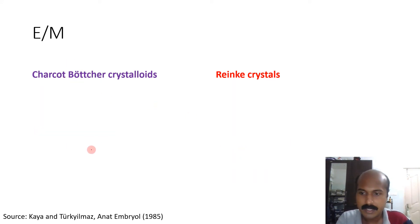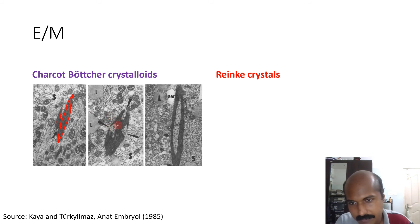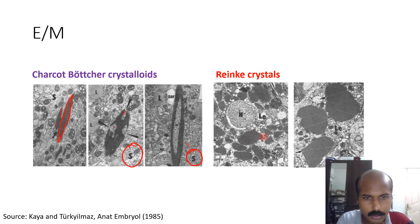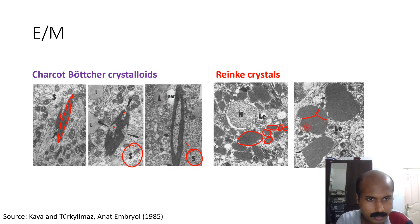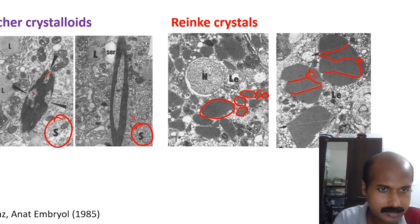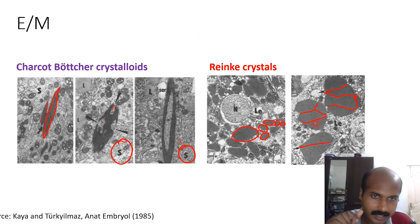Under electron microscopy, the Charcot-Böttcher crystalloids appear as aggregates of small filament structures, with the cytoplasm merging with the crystalloids as seen at the arrows — these are within Sertoli cell cytoplasm. Reinke crystals appear in numerous numbers and are crystalloids that show clear lattice formation with crystallization lines running along their structures.